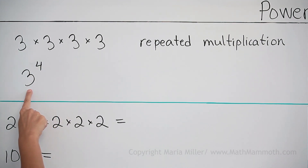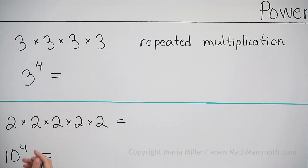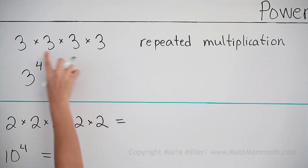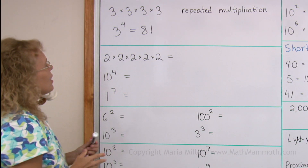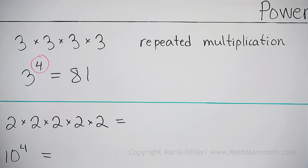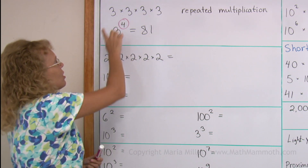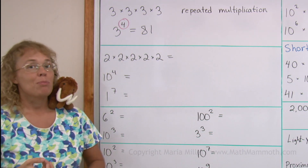This means 3 multiplied by itself four times. We can solve it: 3 times 3 is 9, and 9 times 9 is 81. This little elevated number here is called the exponent, and this 3 is the base number. The whole thing is called 3 to the fourth power — it is a power of 3.